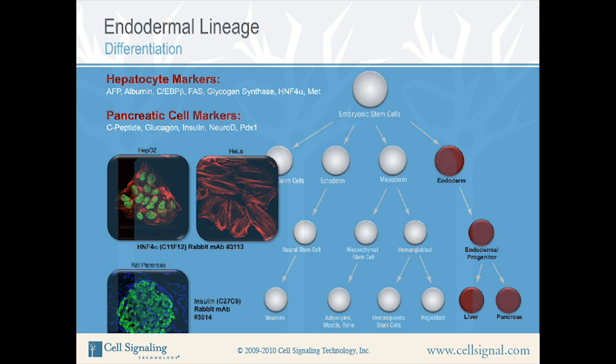In the figure below, IF analysis shows expression of insulin in rat pancreas. The insulin antibody has been labeled green. DNA has been labeled blue with DRAC5. Expression is within beta cells of the islets of Langerhans, which are the insulin-secreting cells.